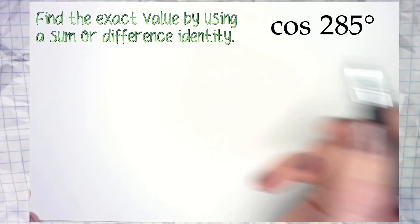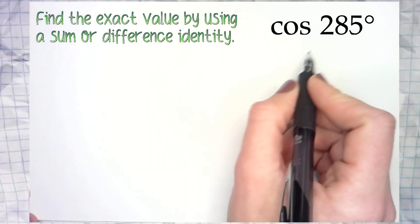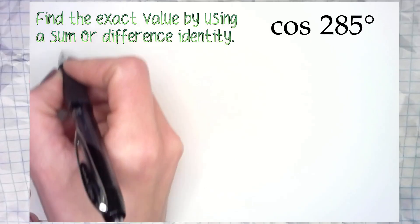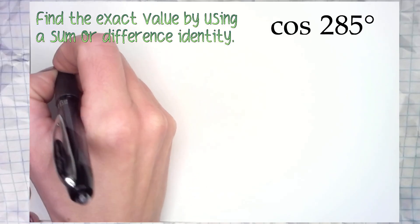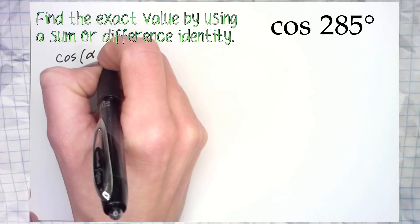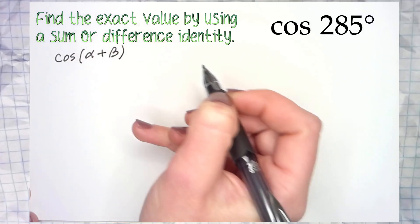So let's get started. If I'm using the cosine angle sum identity, that's going to look like cosine of alpha plus beta. And that identity, you should know it by heart by now if you've used it a few times.